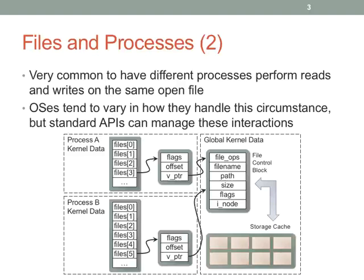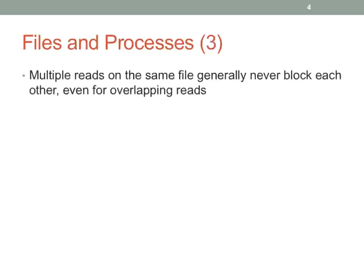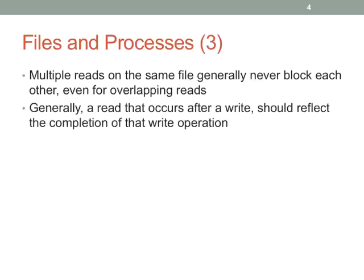OSes have to manage this problem, and there are a lot of different ways they deal with it. Basically, if you're reading, you're all good. If five processes all concurrently hit the same block while it's being loaded into the file system cache, I need to make sure all five processes are blocked and I don't corrupt the OS state. But once that page is loaded, everybody gets to have it. If you have a read that occurs after a write, you need to make sure the write is visible to the reader.